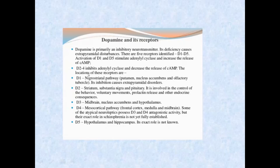The D2 type of dopamine receptor is very important. D2 is present in the striatum, and excitation or inhibition of D2 receptors affects behavior, voluntary movement, and prolactin release. Do you know about neurohormonal diseases like Parkinson's and Alzheimer's? In Parkinson's, dopamine level is decreased and acetylcholine level is increased. For treatment, dopamine facilitators are used to enhance dopamine activity by binding to D2 type receptors.